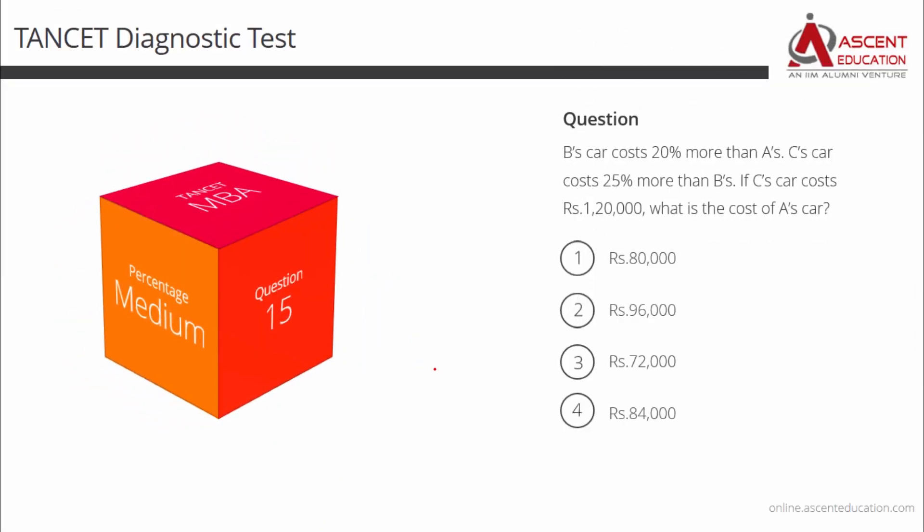This is a medium level difficulty question. The concept tested is percentages. The way you frame the equations is very important. If you write the equation incorrectly, you are likely to get an answer which is incorrect. B's car costs 20 percent more than A's. C's car costs 25 percent more than B's. C's car is rupees 1 lakh 20,000. What we need to find out is what is the cost of A's car.